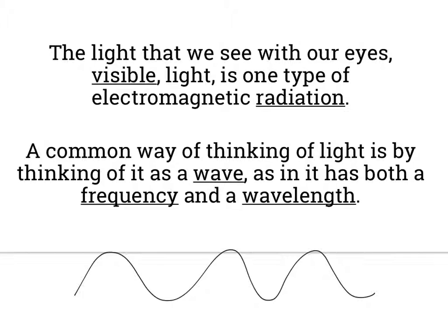It has both a frequency, meaning how spaced out the wave is. This would have a higher frequency than this. And a wavelength, which is basically the distance of the wave. So that's kind of what a wave means, and we've got those two properties of light.